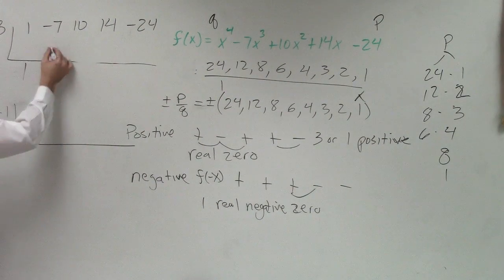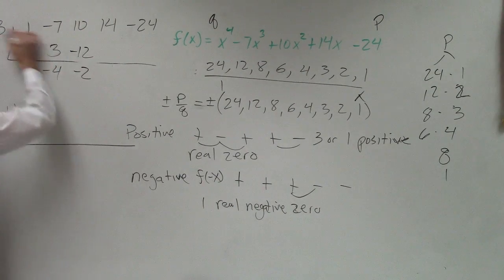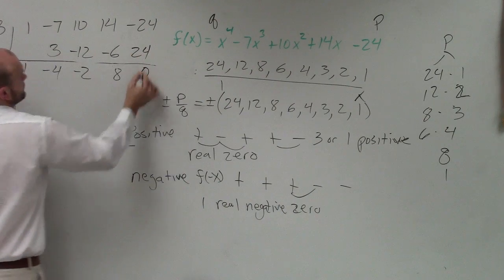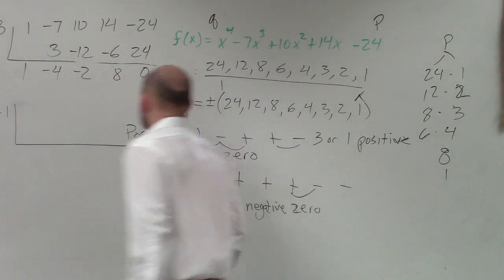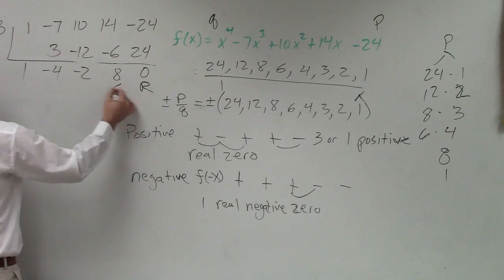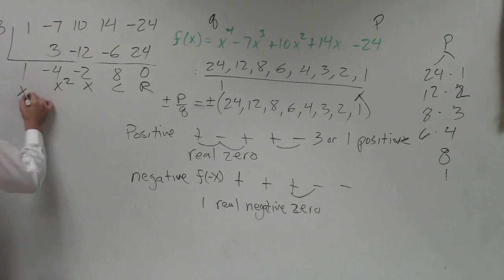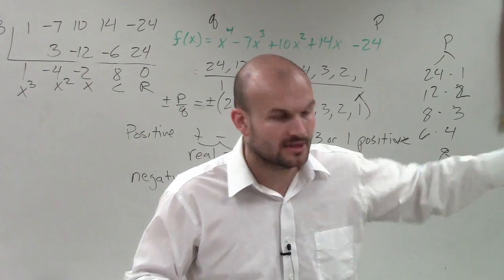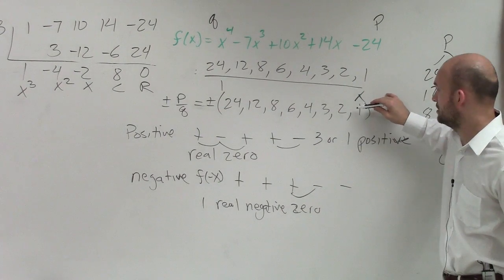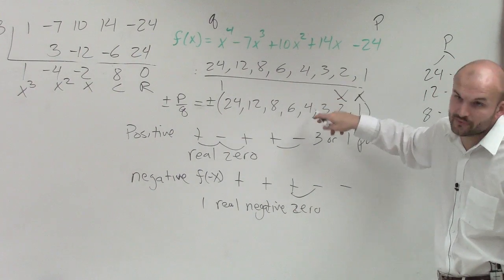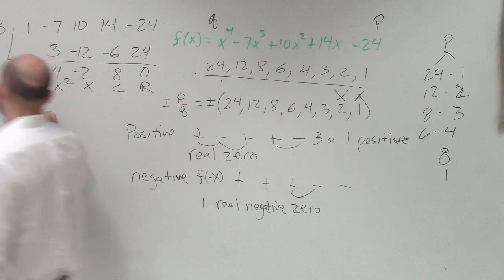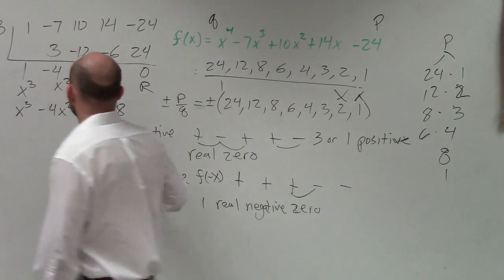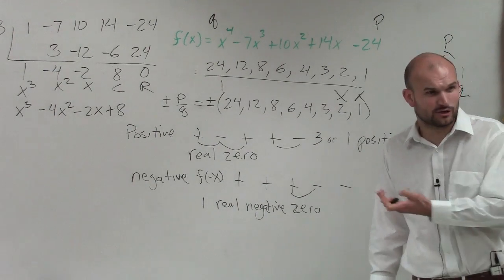So I do 3. Bring down the 1. 1 times 3 is 3, negative 4, negative 12, negative 2, negative 6 — positive 8. So now I have a polynomial. Remember: remainder, constant, linear, quadratic, cubic. We know that 1 is not a zero, negative 2 is not a zero, but 3 is a zero. You can try to factor the remaining cubic — is it factorable by grouping? You could factor it that way and determine the remaining zeros.